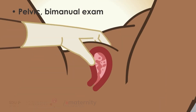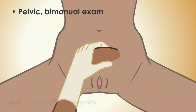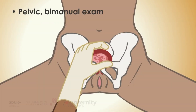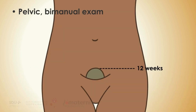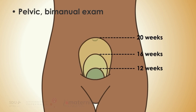2. If ultrasound is not available, estimate the size of the uterus through a pelvic bimanual examination. Around 12 weeks gestation, the uterus is the size of a grapefruit and palpable just above the pubic symphysis. At 16 weeks, the uterus is palpable at the midpoint between the umbilicus and the pubic symphysis. At 20 weeks, the uterus is palpable at the level of the umbilicus.